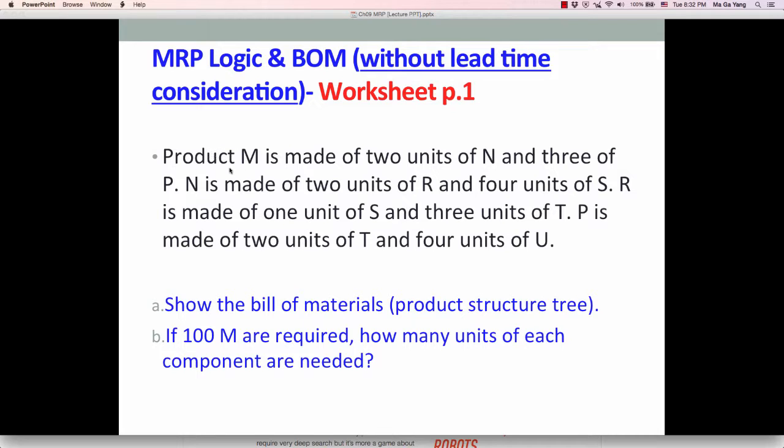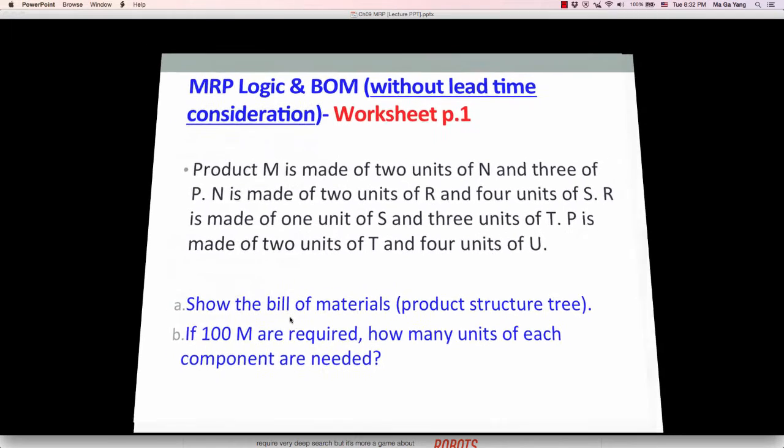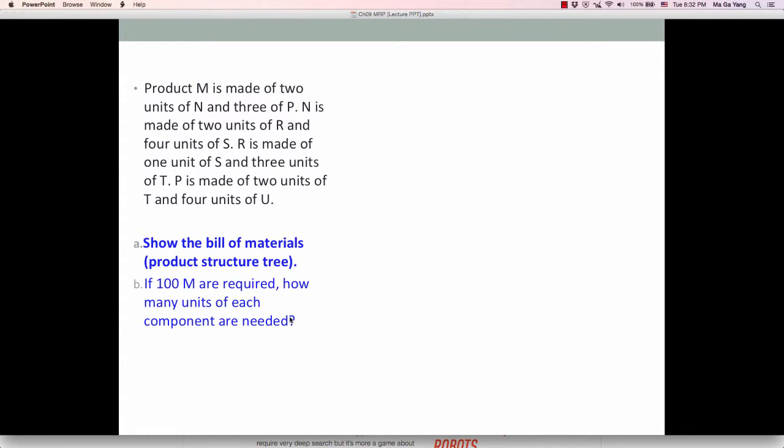Here is product M, which is end item. End item is made of 2 units of N and 3 units of P. It really describes how end item M looks like, what kind of items, what kind of component parts are required to produce end item M. It will lead to make a bill of materials or product structure tree. And next question involves, if 100M are required, how many units of each component are needed? We have to calculate based on the demands of end item. So starting with the first question, show the bill of materials or product structure tree.